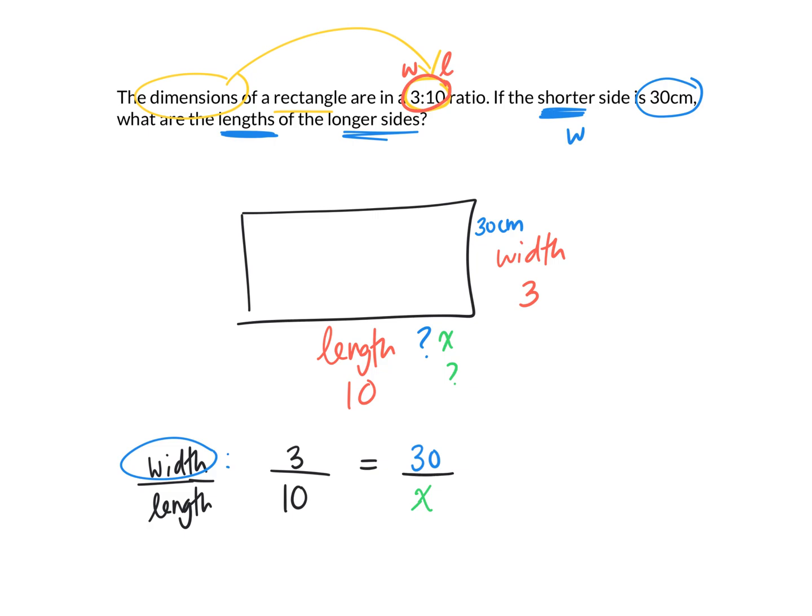So there's a few ways you can solve this. You can look at this and figure out 3 times something gives me 30. We know it's increasing, it's getting larger. We can do this in our head. This one's easy. 3 times 10 is equal to 30. So if I'm multiplying the numerator by 10, what do I have to do to the denominator? That's right, I have to multiply it by 10. 10 times 10 is 100, which means that the length has to be 100 centimeters if the width is 30 centimeters.